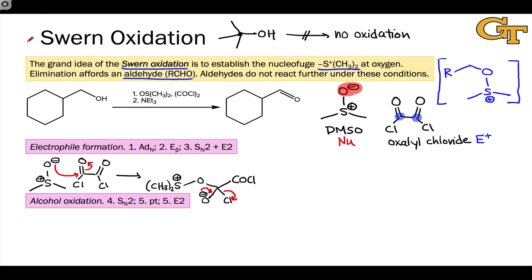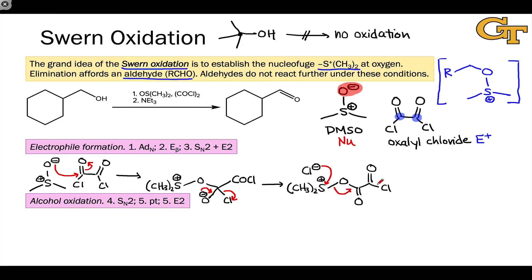Beta elimination regenerates the carbonyl group and establishes a potentially good leaving group at sulfur, with an oxygen connected to a carbonyl which is connected to an acyl chloride group. Attack of chloride at that positively charged sulfur sets off a cascade of electron flow — an SN2 process from sulfur's perspective — generating a dimethylsulfonium chloride intermediate. The byproducts are carbon monoxide, carbon dioxide, and chloride anion.